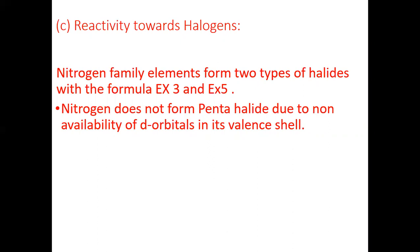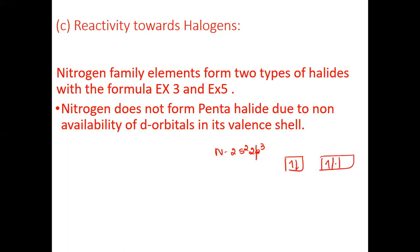In the nitrogen family, elements can exist in two forms of halides. Nitrogen's electronic configuration is 2s2 2p3, so it has two s electrons and three p electrons. Nitrogen can maximum form three covalent bonds.